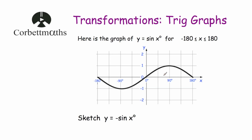We're reflecting in the x-axis, so points on the x-axis are invariant: (180°, 0), (0°, 0), and (-180°, 0) stay where they are. The point (90°, 1) above the x-axis reflects below to become (90°, -1). The point (-90°, -1) below the x-axis reflects above to (-90°, 1). Then we draw a smooth curve through those points — and that is the sketch of y = -sin x.